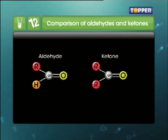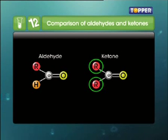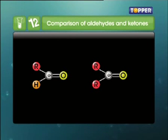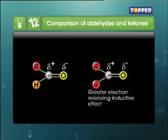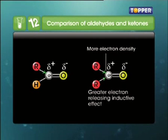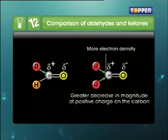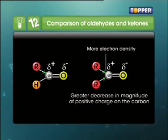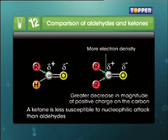In an aldehyde, there is only one alkyl group, whereas in ketones, there are two alkyl groups. Thus, the electron releasing inductive effect of two alkyl groups in ketones is more than that of aldehydes. So, in a ketone, the electron density on the carbon atom of the carbonyl group is more than that of aldehydes. Likewise, the decrease in magnitude of positive charge on the carbon is more in case of ketones. Hence, a ketone is less susceptible to nucleophilic attack than aldehydes.